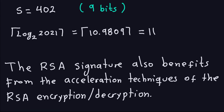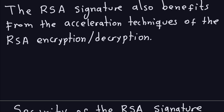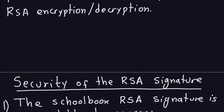As mentioned for RSA, there are techniques to accelerate modular exponentiation and decryption. RSA signature benefits from the same acceleration techniques used in RSA encryption/decryption — covered in the video called 'Speeding Up the RSA.' Since RSA signature is very similar to RSA encryption/decryption, it benefits directly from those methods.